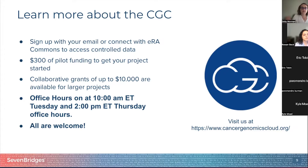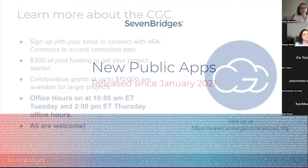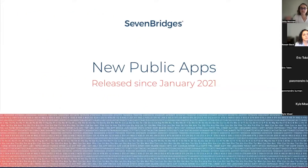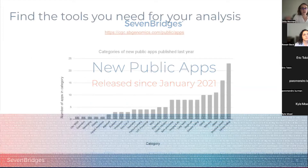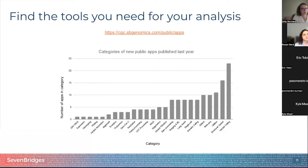Another way we have contributed to decreasing barriers of adoption of the CGC is by providing analysis tools for researchers who may not have computational resources or expertise. Today I'm going to highlight some of the new tools we have released since January 2021 and made available to anyone in the community. These apps are all open source. You can go to cgc.sbgenomics.com/public/apps and see the 704 applications currently available.